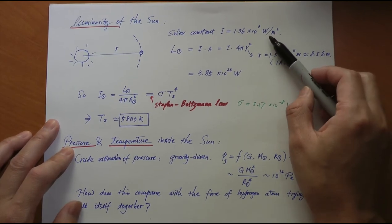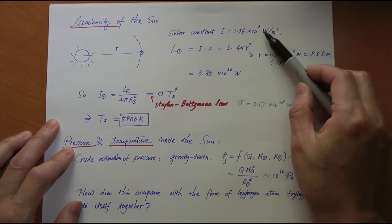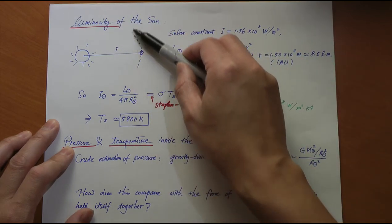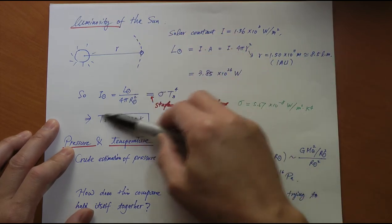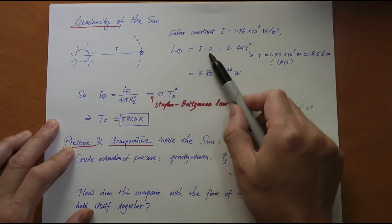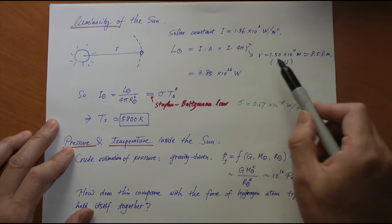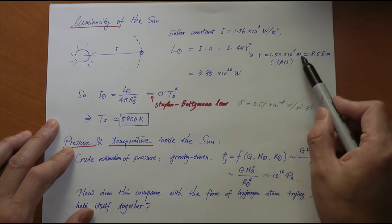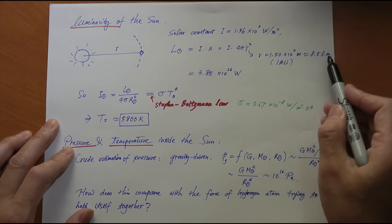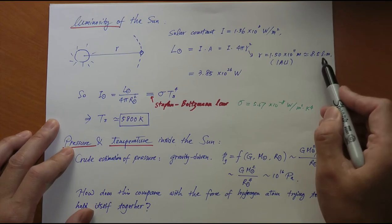If we multiply this intensity, which is power intercepted per unit area, by the area of this large sphere, because everywhere on that sphere, the intensity will be the same. So I times A, A being 4πr^2. R is 1 AU or 1.5 times 10^11 meters, which is the same as 8½ light minutes, the distance traveled by light in 8½ minutes.